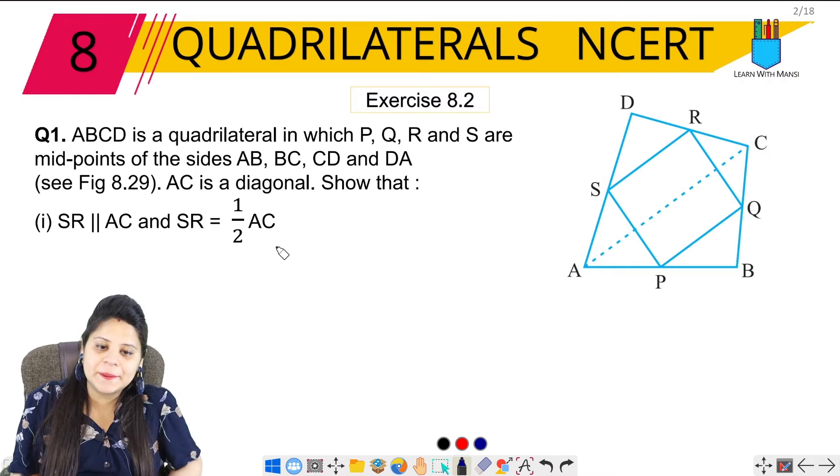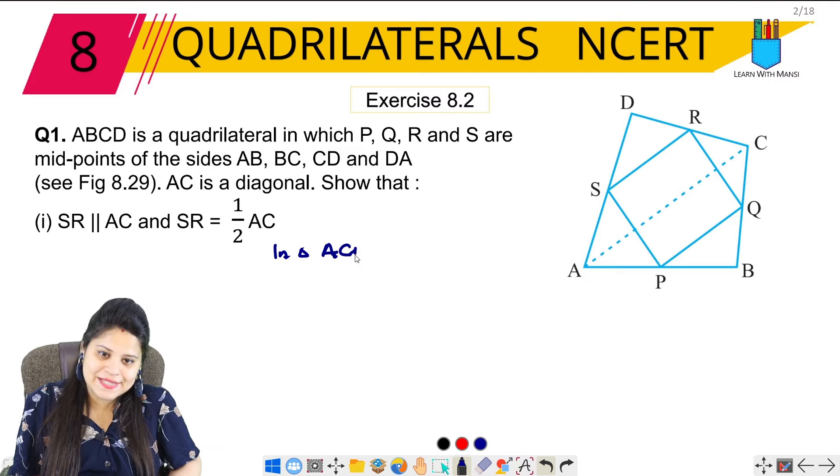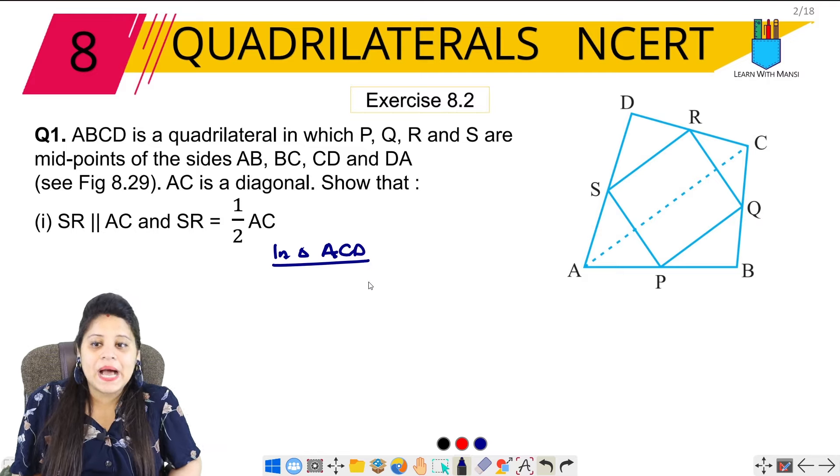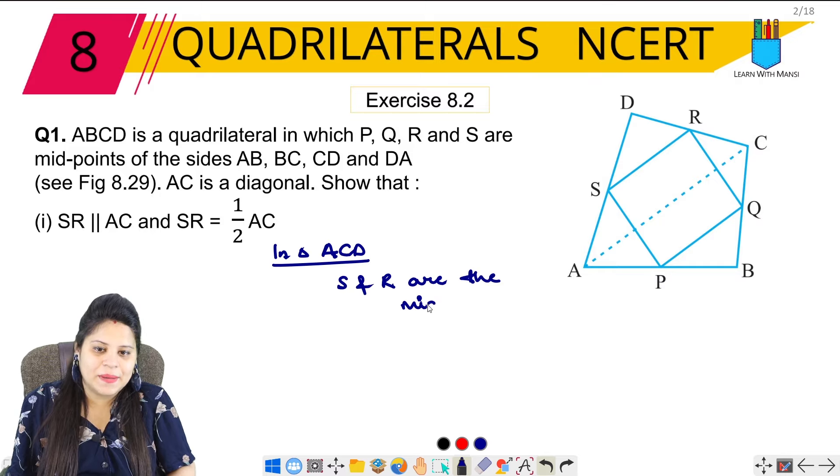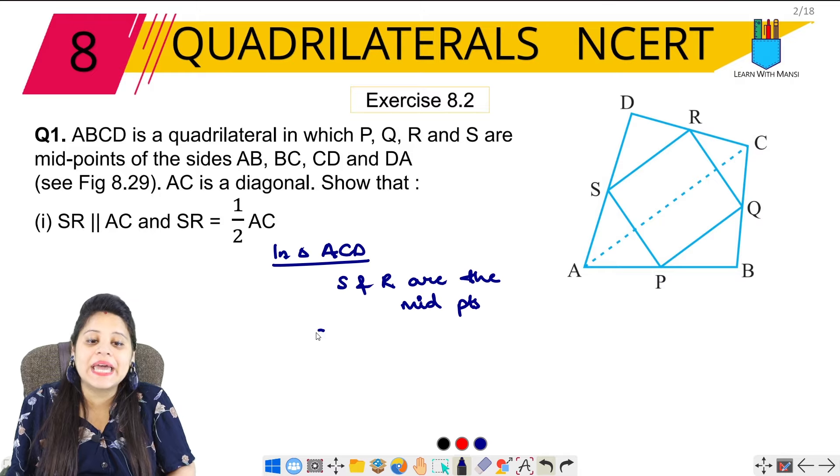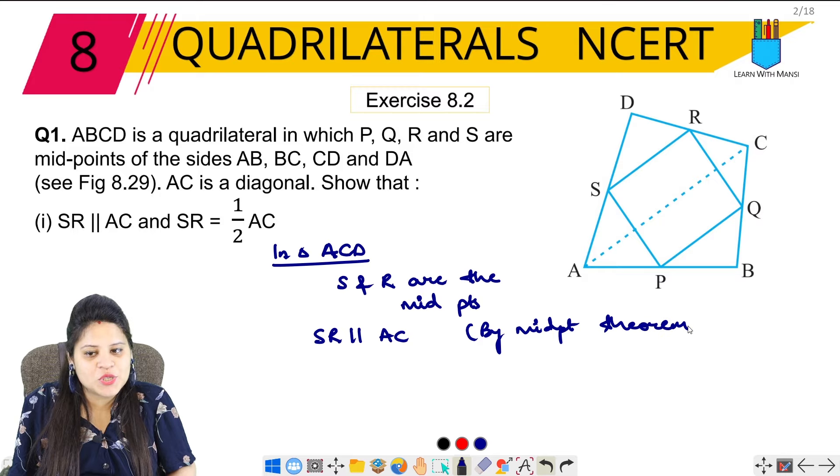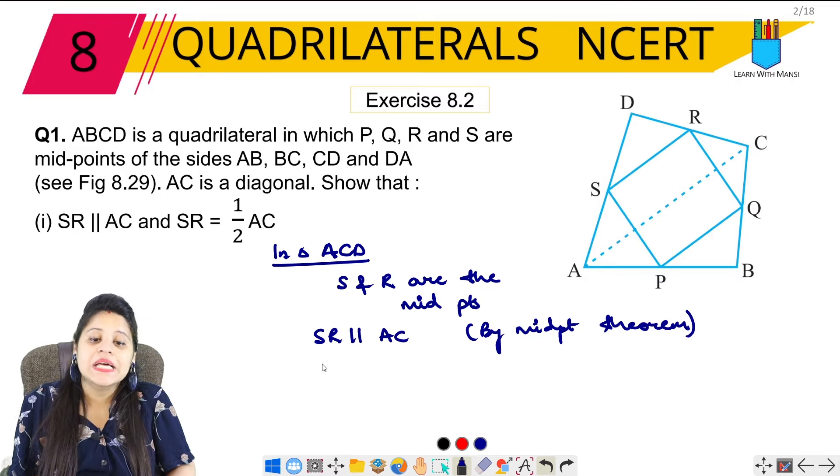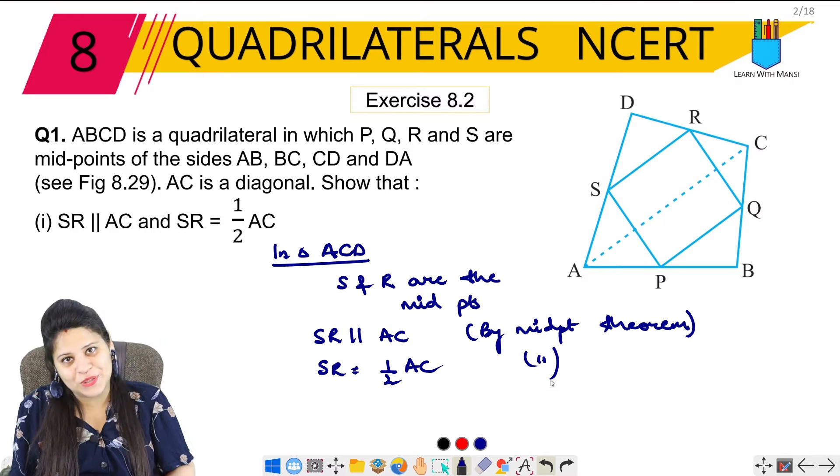In triangle ACD, we are given S and R are the midpoints. We can simply say that SR is parallel to AC by the midpoint theorem. Similarly, SR equals half of AC, again by the midpoint theorem.